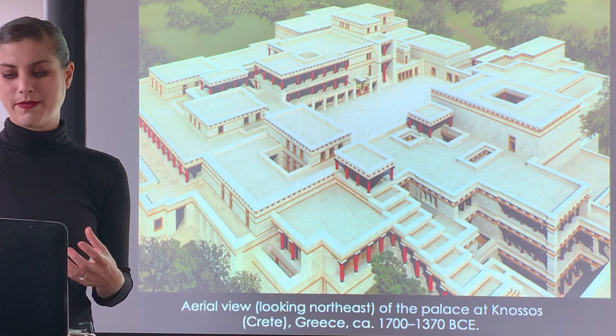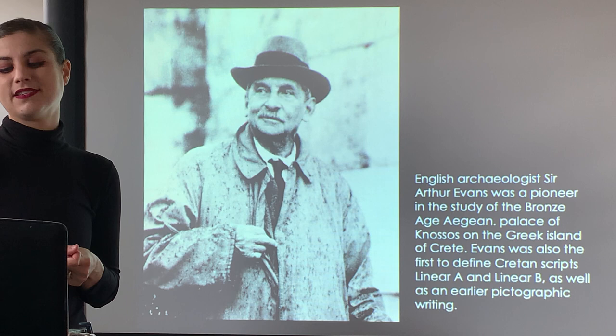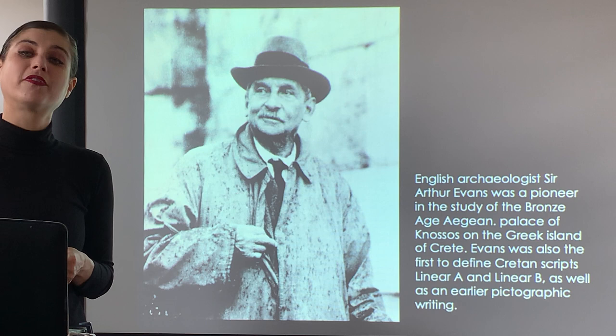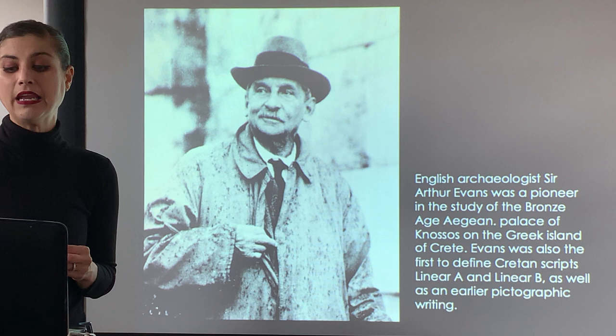Sir Arthur Evans is the archaeologist who discovered the Palace of Knossos and is the pioneer in the study of the Bronze Age in the Ancient Aegean. He was also one of the first archaeologists to define the Cretan scripts, both Linear A and Linear B, working to crack those codes in order to interpret the written record of the Ancient Aegean and some of the early pictograph writings.